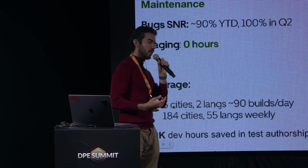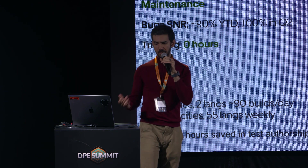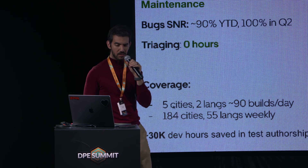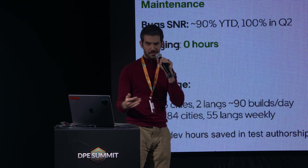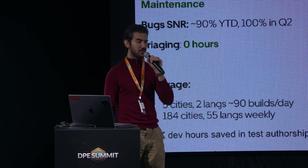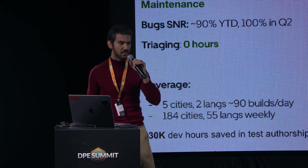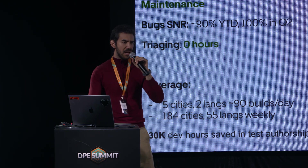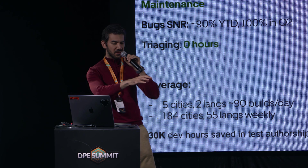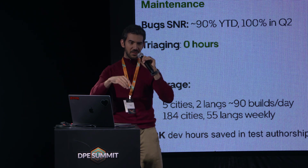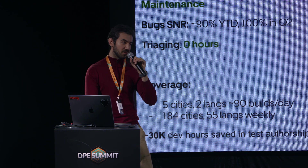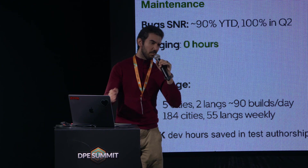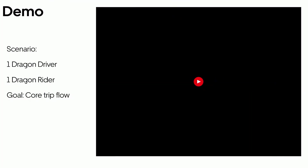We don't spend time triaging, unlike traditional testers. On every Android CD build we execute core flows in five cities and two languages — about 90 times per day. On weekends closer to release time, we run in 184 cities and 55 languages to keep our top markets healthy. Because we cover so many cities and languages in one go, we've saved over 30,000 developer hours in test authorship alone, and maintenance savings are assumed to be substantial as well.